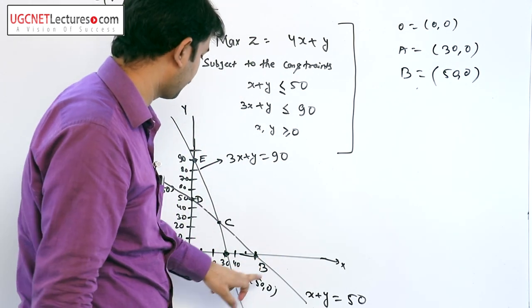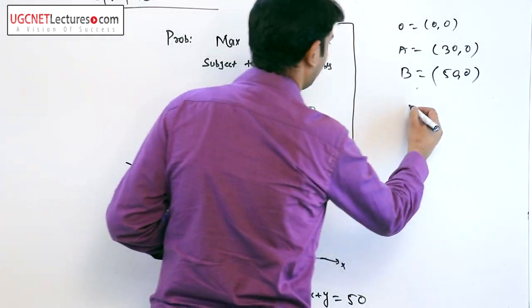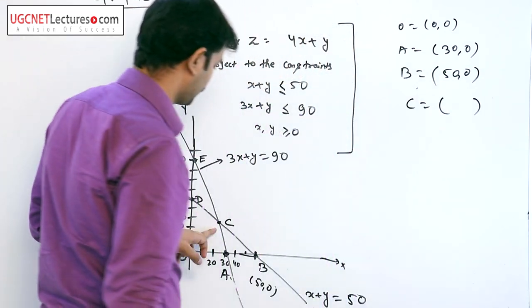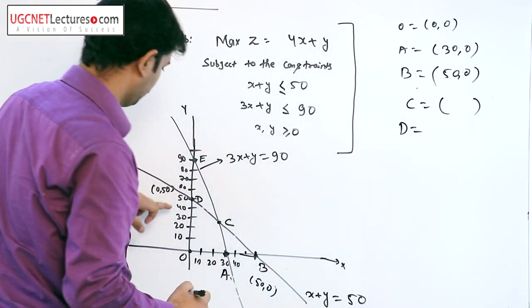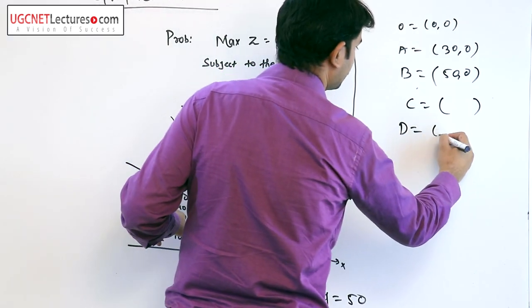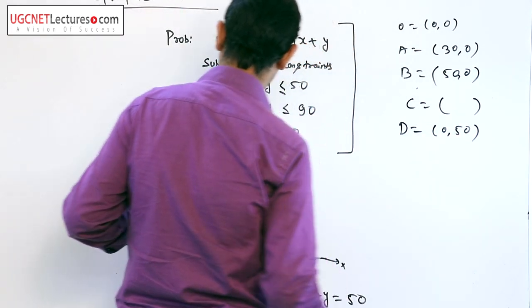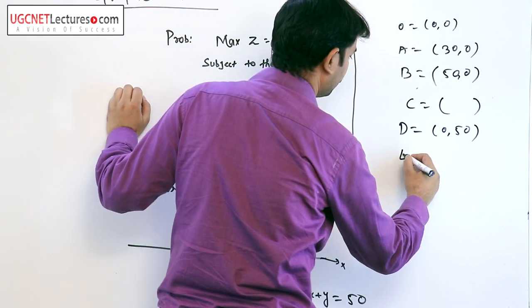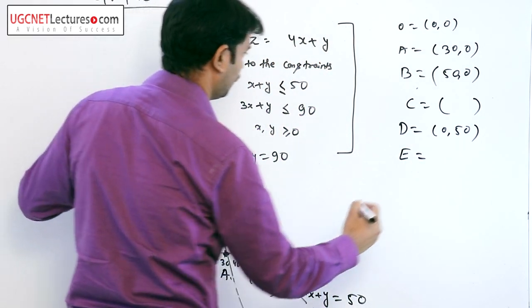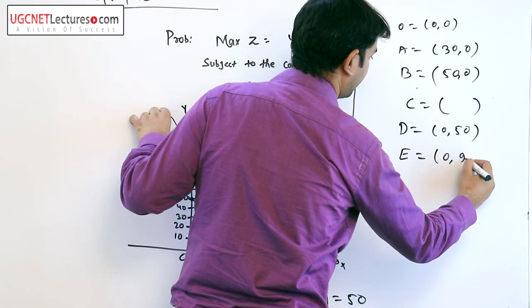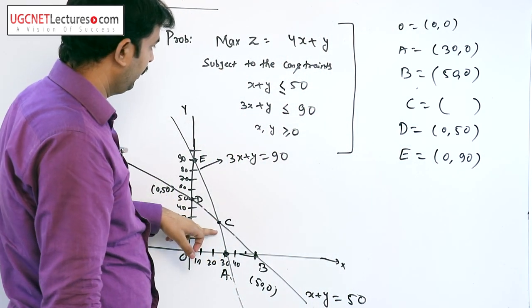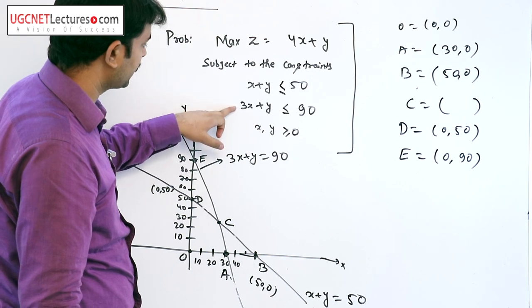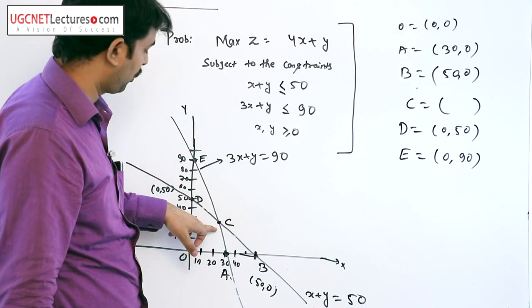The coordinates of C, D, and E are also marked. For the coordinate of C, we need to find it. Why the coordinate of C? If we solve these two equations, then we find the intersection point C.